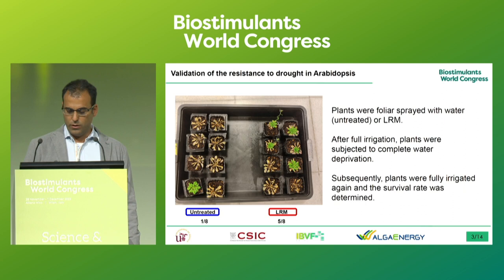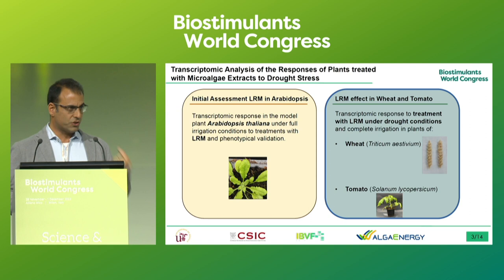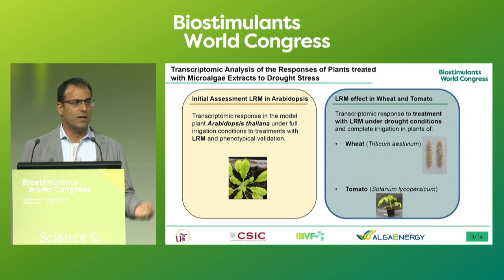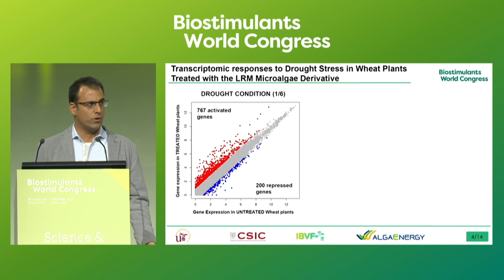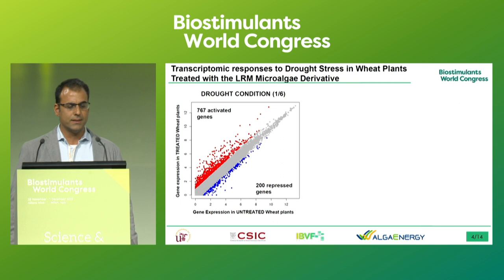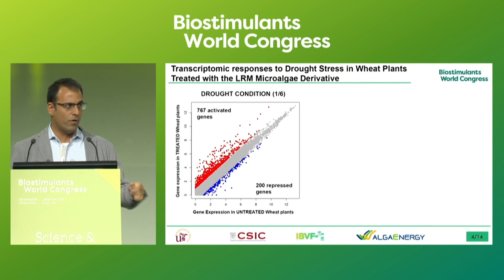Now that we had identified the stress of interest, we moved to plants of agronomical interest, focusing specifically on drought conditions. We started with wheat. Besides foliar application, we also performed soil application, as the company already recommended that. Again, we compared treated plants with untreated plants, and here both were grown under water deprivation at one-sixth of the maximum retention volume.